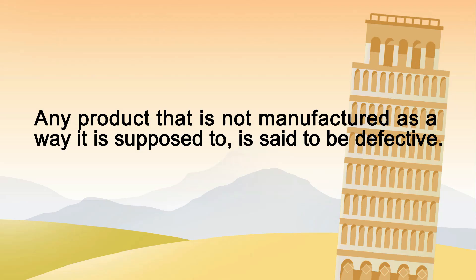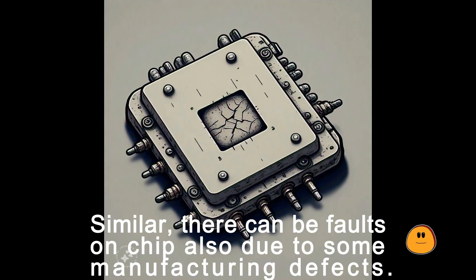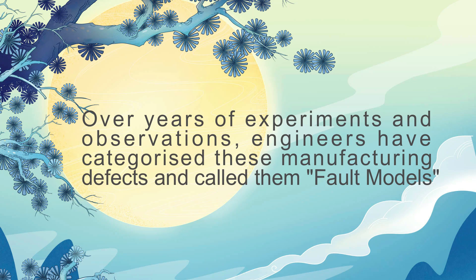Any product that is not manufactured the way it is supposed to be is said to be defective. Similarly, there can be faults on chip also due to some manufacturing defects. Over years of experiments and observations, engineers have categorized these manufacturing defects and called them fault models.